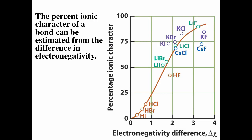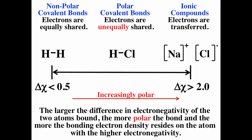You can plot percent ionic character versus difference in electronegativity. As the difference in electronegativity increases, the percent ionic character also increases. You can also characterize this continuum as: the larger the difference in electronegativity of the two atoms bonded, the more polar the bond, and the more bonding electron density resides on the atom with higher electronegativity.